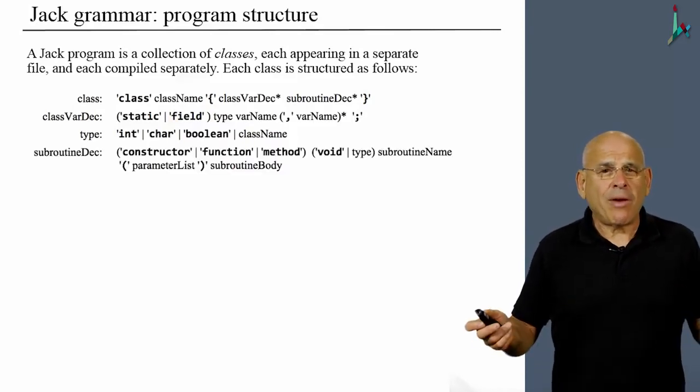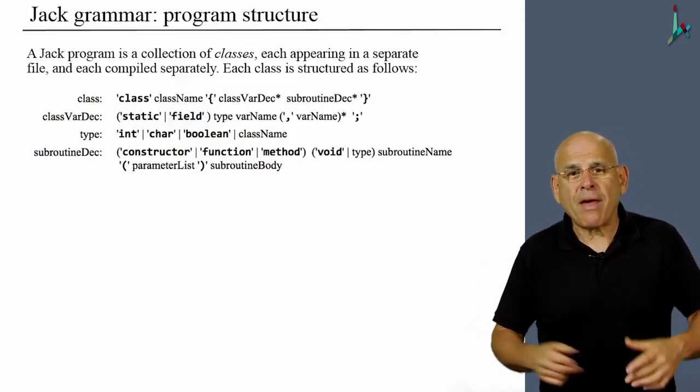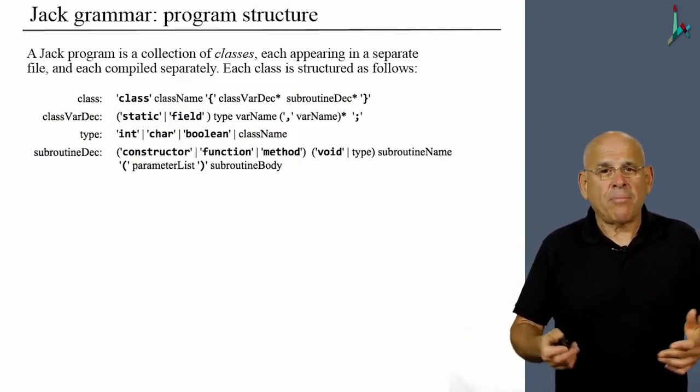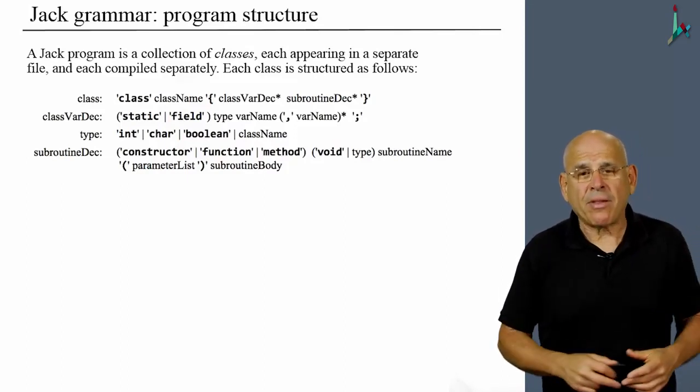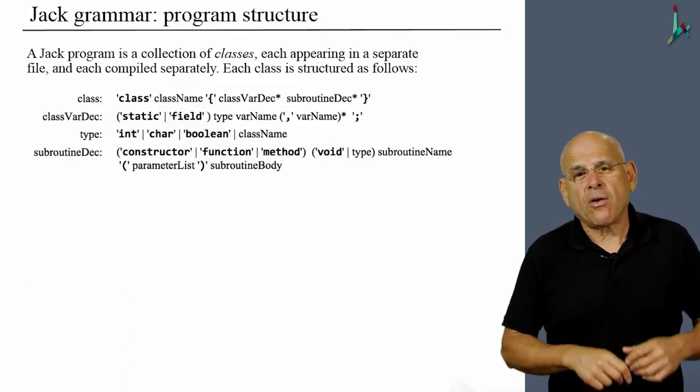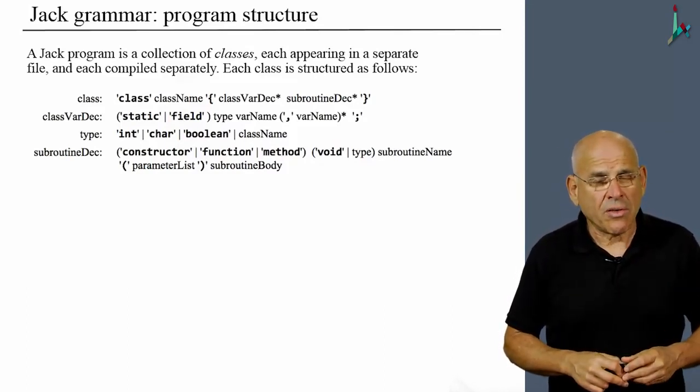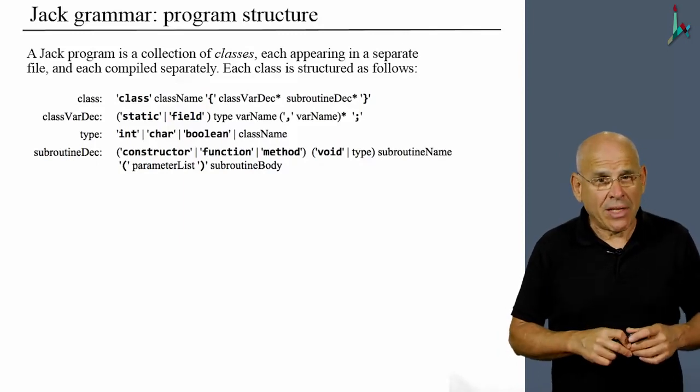Subroutine declaration always begins with either constructor, function, or method. The subroutine can be either void or a typed subroutine. In other words, it returns either a void or a typed value, and so on and so forth, okay?